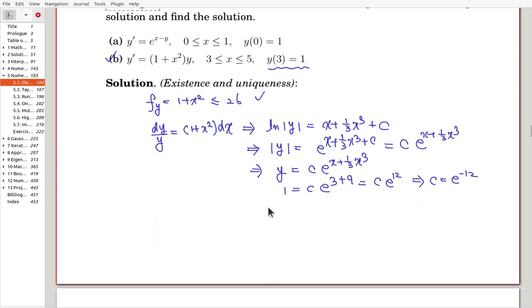So, finally, we can get the solution: y equals, here, okay, 1 over e to the 12, and then e to the x plus 1 third x cubed.